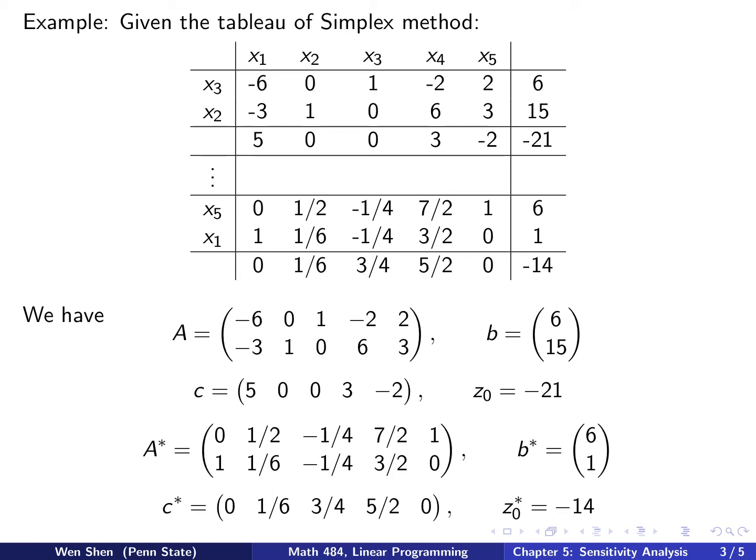The A matrix is the coefficient matrix of the initial problem - this 2 times 5 matrix taken from this block of the tableau. B is this constant vector, C is the coefficient of the objective function, and the z naught value is this one. The A star is taken from this block in the final tableau, B star is this constant vector, C star is this row vector, and z naught star is this number.